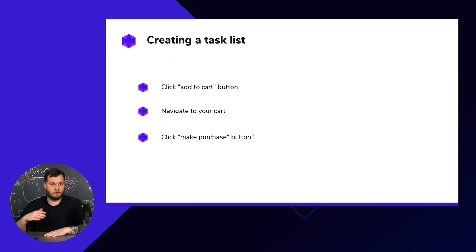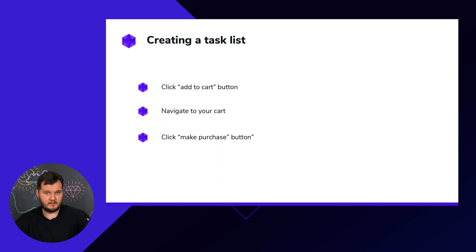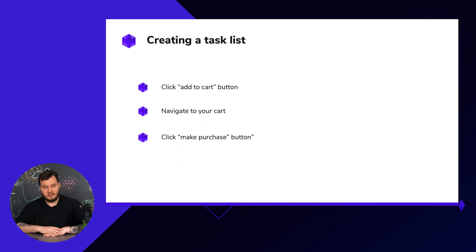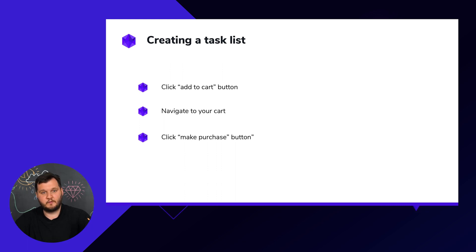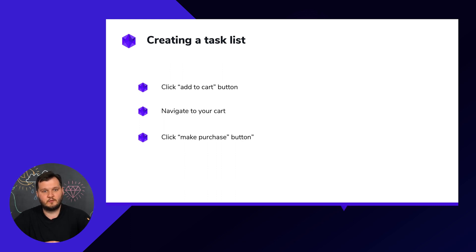The task list might start with: open a web browser, navigate to your webpage, choose a product, click the 'Add to Cart' button, navigate to your cart, and then click the 'Make Purchase' button. We check whether those people have any problems completing this task list. If they stop at some point, we ask: what's happening? Do you have any problems? Maybe you expect something to be somewhere else and you can't find it?